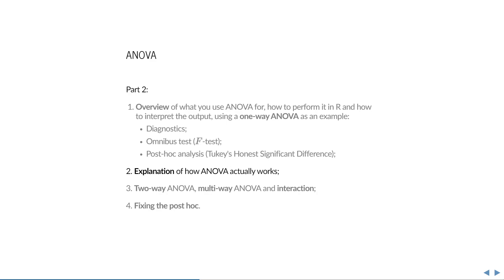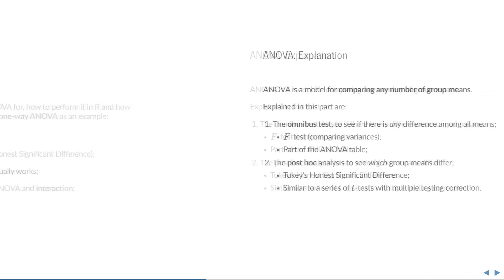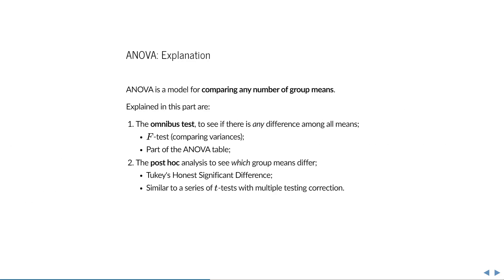In this part of the lecture, I will explain how ANOVA actually works. If you recall from part 1, ANOVA has a model for comparing any number of group means. It consists of a two-step approach that aims to reduce the chance of false positives from the multiple comparisons involved.